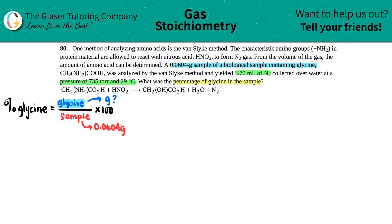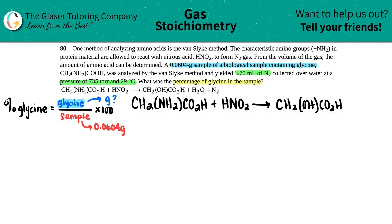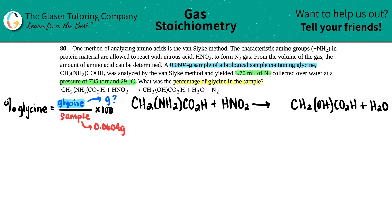Now they give us a balanced equation, so I'm just going to rewrite it a little bigger. Generally when they give us a balanced equation, chances are we have to use it somehow. So we have CH2(NH2)CO2H reacting with nitrous acid, HNO2, and this will give us CH2(OH)CO2H, plus H2O, plus N2.